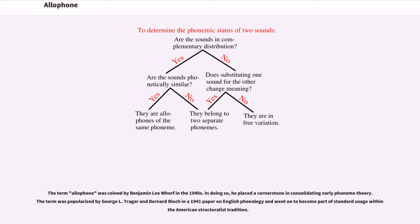The term allophone was coined by Benjamin Lee Whorf in the 1940s. In doing so, he placed a cornerstone in consolidating early phoneme theory. The term was popularized by George L. Trager and Bernard Bloch in a 1941 paper on English phonology and went on to become part of standard usage within the American structuralist tradition.